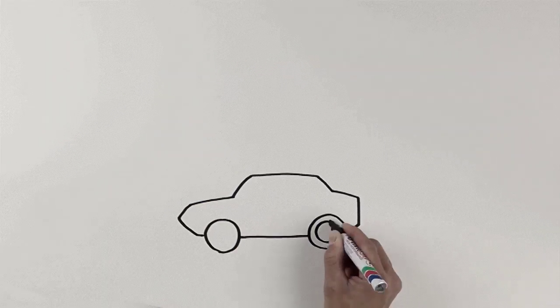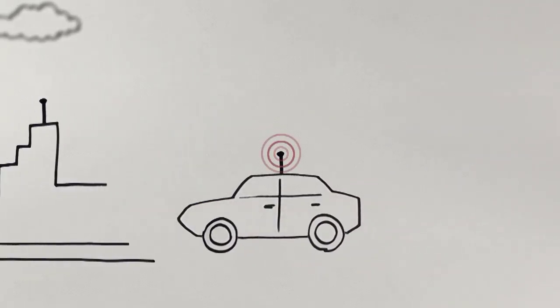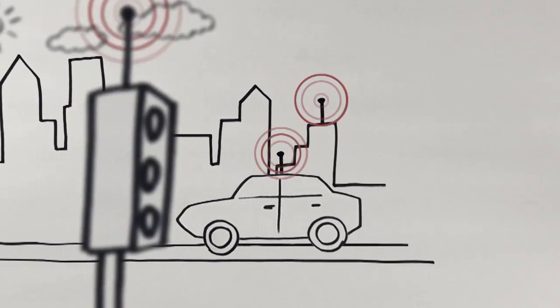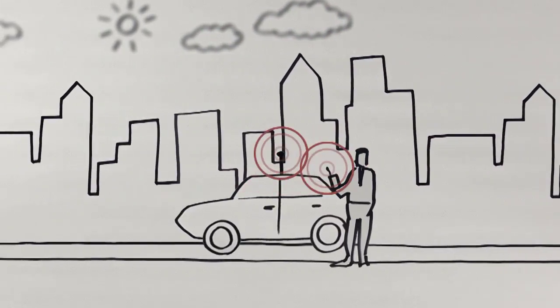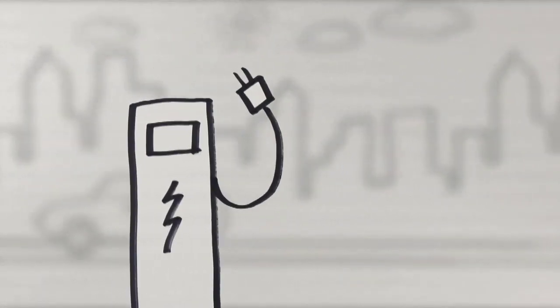As you're driving along, your car is part of the connected society, constantly receiving and transmitting information. If your car battery is low, the navigator directs you to the nearest charging station.